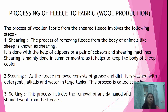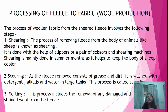Shearing is done with the help of clippers, a pair of scissors, or shearing machines — similar to how shaving machines are used to remove hair. Shearing is mainly done in summer months because removing the wool coating helps keep the body of the sheep cooler during the high temperatures of summer.